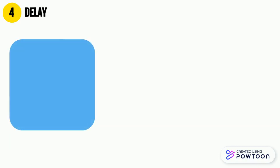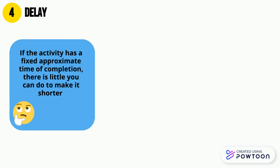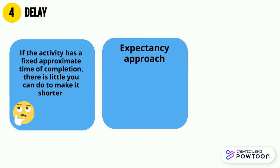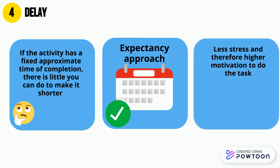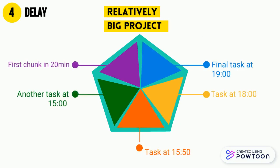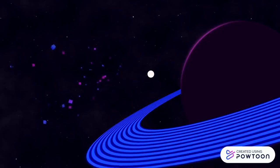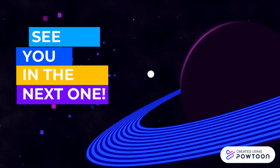And finally, delay. This one is hard to manipulate and there's not much you can do if your homework is to complete a 10-page assignment — it would take time. However, I recommend using the expectancy method. By breaking activities into chunks, you can be more flexible with the time you work and therefore feel less overwhelmed. For example, you can divide time sessions throughout your afternoon. I hope you enjoyed the video and see you on the next one.